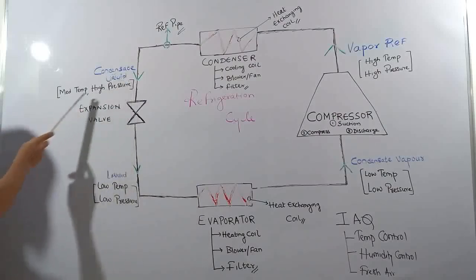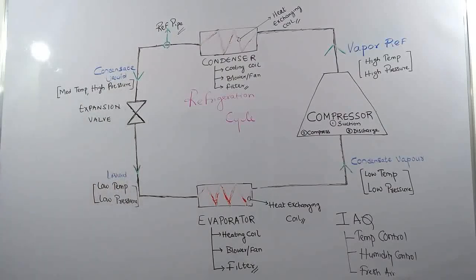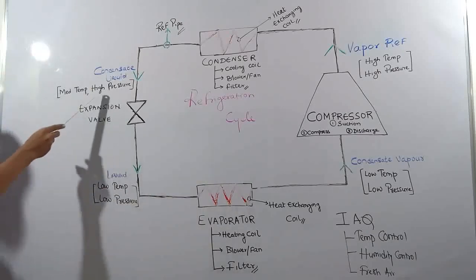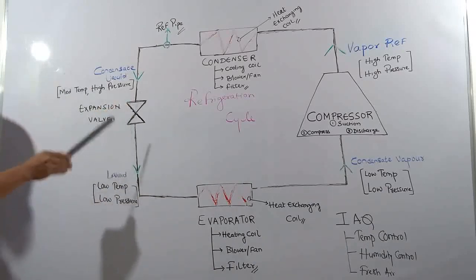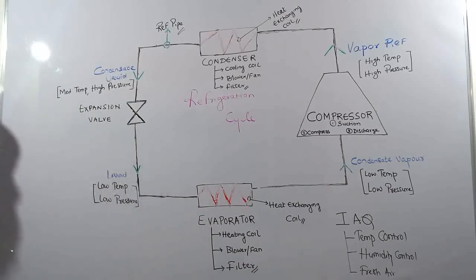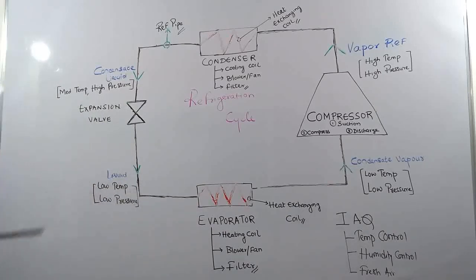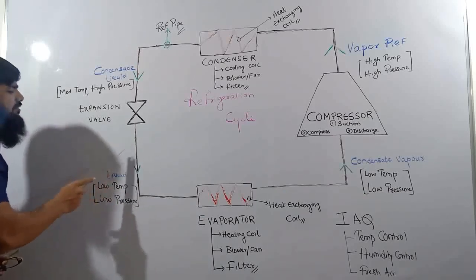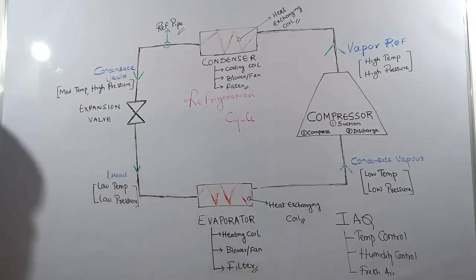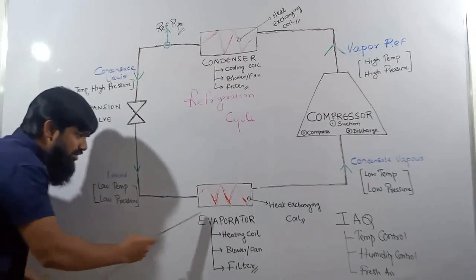The condensate liquid, which is at medium temperature and high pressure, is given to the expansion valve. The expansion valve reduces the pressure of the refrigerant coming at high pressure from the condenser. As the pressure decreases due to the expansion valve, the condensate liquid converts to low pressure, low temperature liquid - approximately at a temperature of 5 to 6 degrees Celsius, in liquid state. From the expansion valve, it is given to the evaporator.